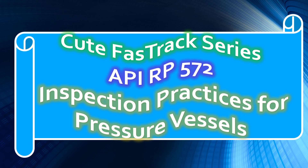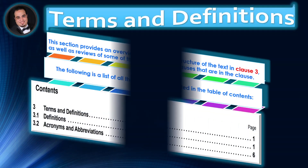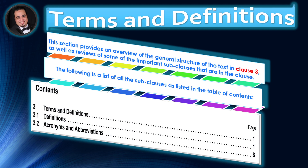Welcome to the Qt Fast Track Series for API Recommended Practice 572, Inspection Practices for Pressure Vessels. In this lecture, we will discuss Clause 3, Terms and Definitions. This section provides an overview of the general structure of the text in Clause 3, as well as reviews of some of the important sub-clauses. The following slides highlight important information contained in Clause 3 accompanied by the sub-clauses.